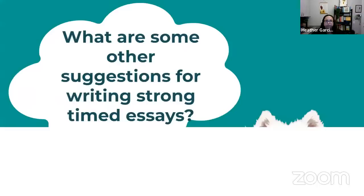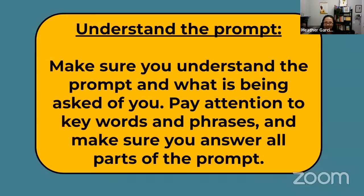Some other suggestions for writing timed essays. Please do not rush through the prompt. You have three different prompts — the poetry, the prose, and the literary argument. Each of those prompts deserves your attention and annotation. Underline, circle — I like to number things, going to a one and circling it, a two and circling it, so I can make sure at the end of the essay that I've done all the things the prompt asked me to do. Pay attention to the keywords and phrases. If they're telling you to write about one character, please focus on one character — not six, not three, not even two. You get one.